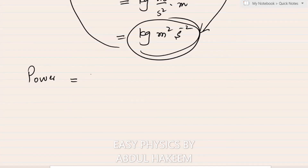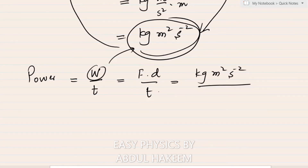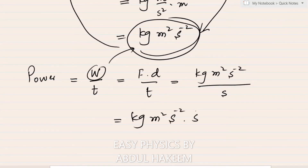For power: power = work / time. Work base unit is kg·m²·s⁻², and time is in seconds, so power base unit is kg·m²·s⁻³.